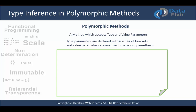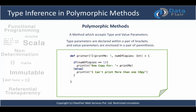Type parameters are declared within a pair of square brackets, while value parameters are enclosed in parentheses. Let's look at an example: we have a method 'printer' that takes a type parameter T and two value parameters — 'printMe' of type T, and 'numberOfCopies' of integer type. The method applies some logic using these parameters. The print object type is not defined upfront — dynamically, whenever we call this method, we pass 'printMe' directly and let Scala apply type inference.